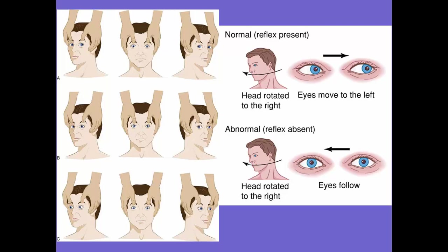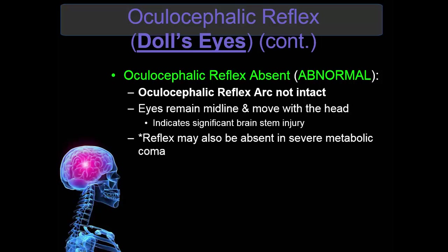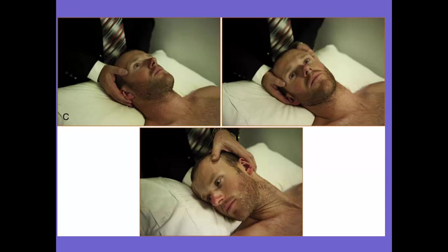This is showing how it looks: when doll's eyes are present, the eyes go in the opposite direction of head turning. If they stay fixed or midline, then that is an absent reflex — doll's eyes are absent. The abnormal response shows the eyes staying midline, which is a bad, abnormal finding.